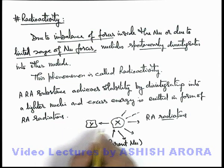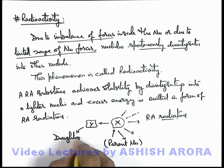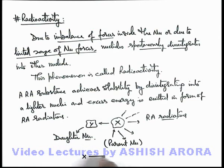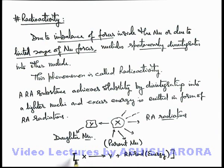The parent nucleus is the radioactive element. And the nucleus which is thus formed after emission of radioactive radiation is termed as the daughter nucleus. The reaction can be written as: X gives Y plus radioactive radiations, which carry the excess energy released in the process of radioactivity. This nuclear reaction gives us the idea about how radioactive emission or radioactive radiations are emitted from a nucleus.